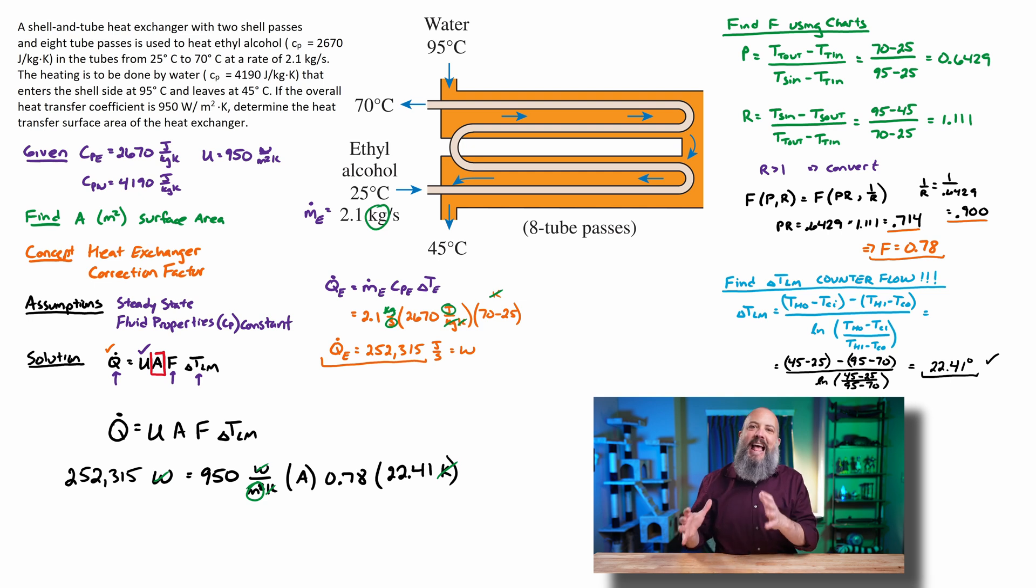And 22.41, that is the delta T_LM log mean temperature difference for this two shell pass, eight tube pass heat exchanger, shell and tube style heat exchanger. Calculate the numbers. Area 15.2 meters squared.